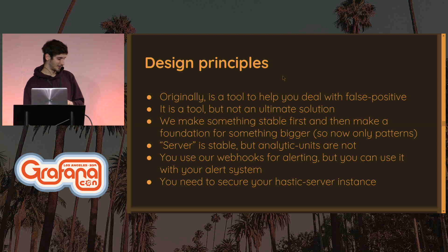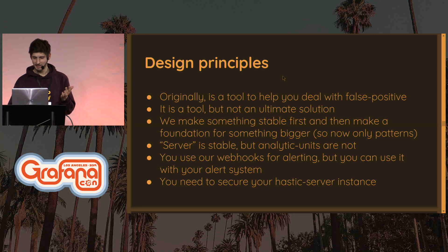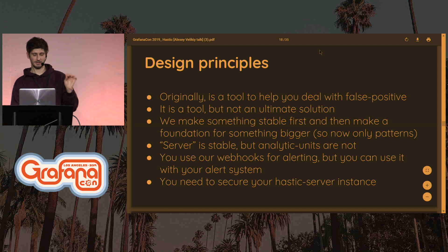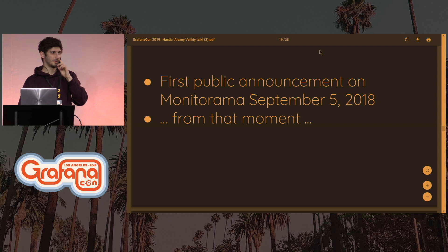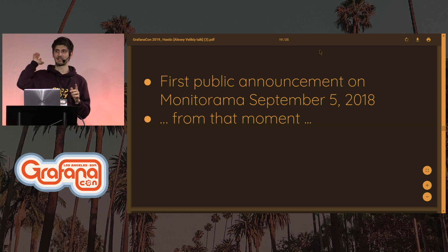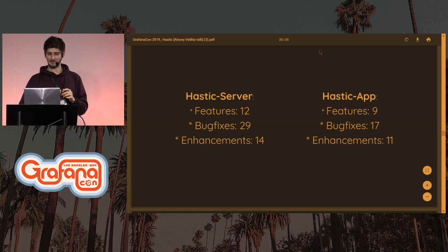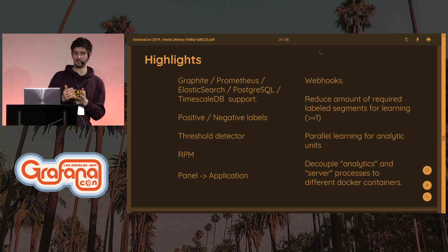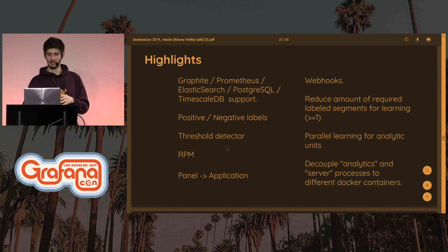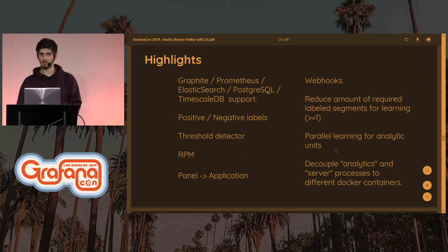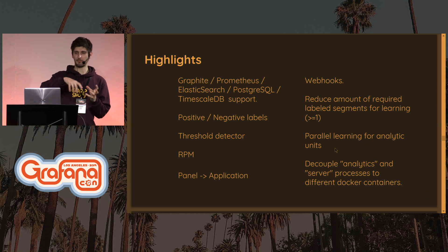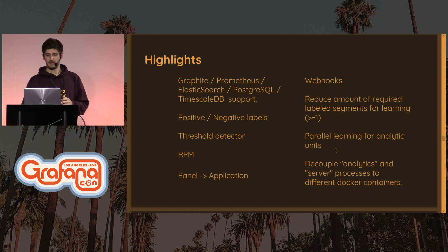Since last year — for anyone who was at GrafanaCon in Amsterdam — from that moment we made a lot of things. Most interestingly, we started to support a lot of databases. We added a super feature: the threshold detector. We also worked a lot on the Python process — we parallelized the model learning so you can train a lot of models at the same time. And you can install it on CentOS with RPM.